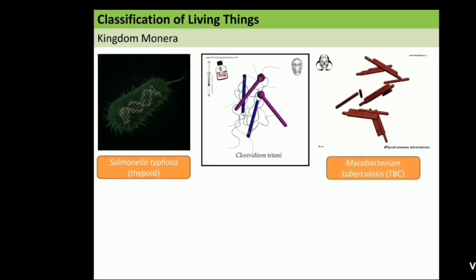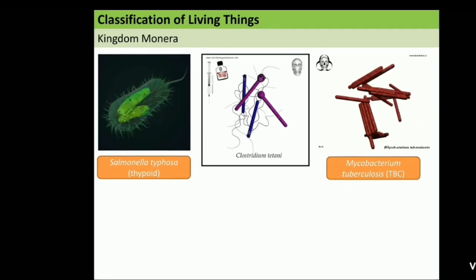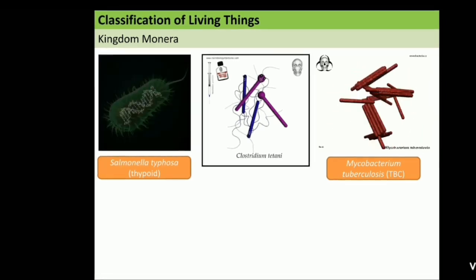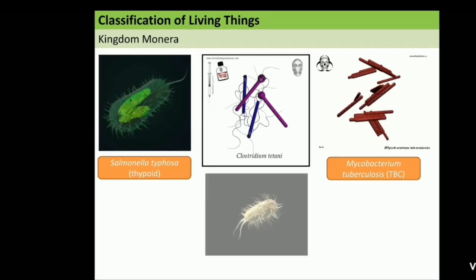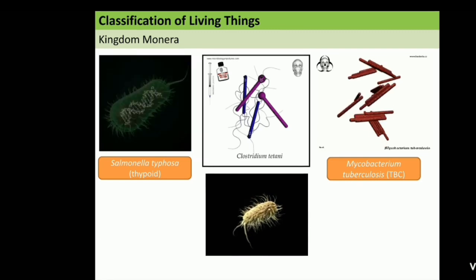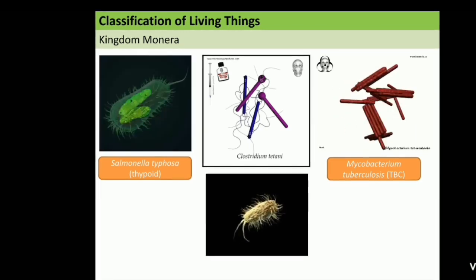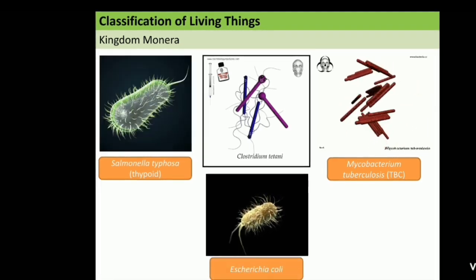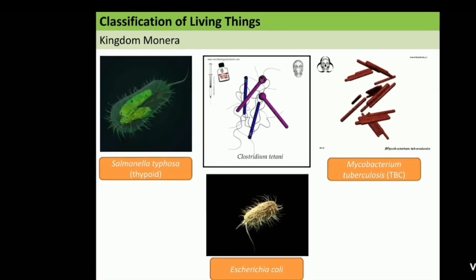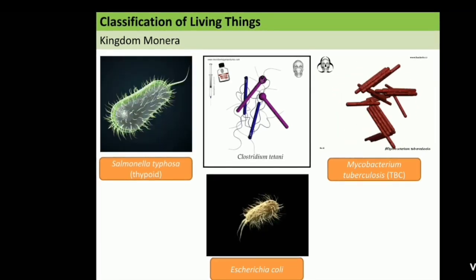And the third is mycobacterium tuberculosis. As we know that, this is the kind of bacteria that can cause TBC disease. And the last, this is the good bacteria for our body. And this is Escherichia coli. It can help to decompose food inside of our large intestine.